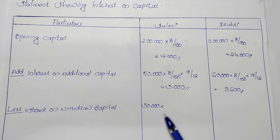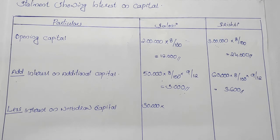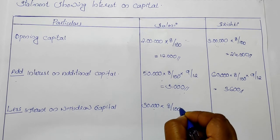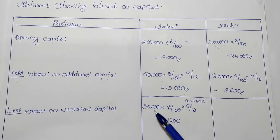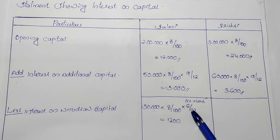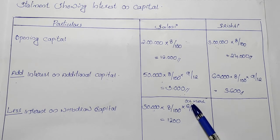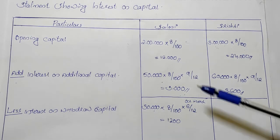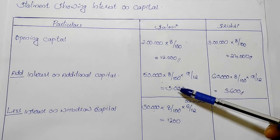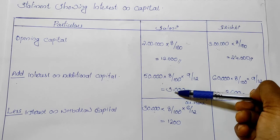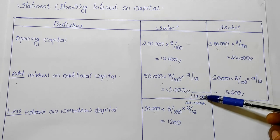What happens in October — on 1st October — we deduct the interest on capital. We deduct the interest on capital in October and November as part of the calculation.